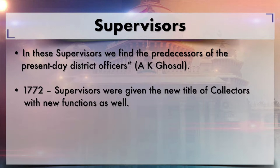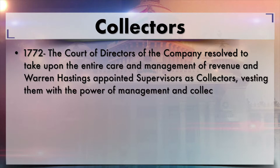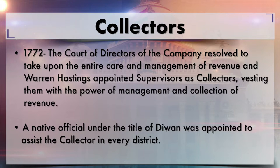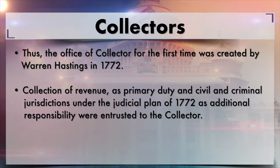In 1772, supervisors were given the new title of collector with new functions. The court of directors resolved to take charge of the entire management of revenue, and Warren Hastings was appointed Governor-General. Warren Hastings appointed supervisors as collectors, vesting in them the power of management and collection of revenue. A native official under the title of Diwan was appointed to assist the collector in every district. Thus, in 1772, the office of collector was established in India.